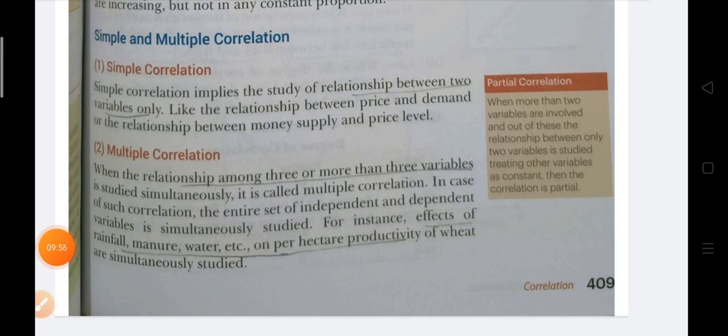Partial correlation is when you are given 3, 4 or more than 2 statistical series, but you are finding the relation between only 2 of them while keeping the rest constant. However, in your syllabus, neither partial correlation nor multiple correlation is included — only simple correlation between 2 series is required.